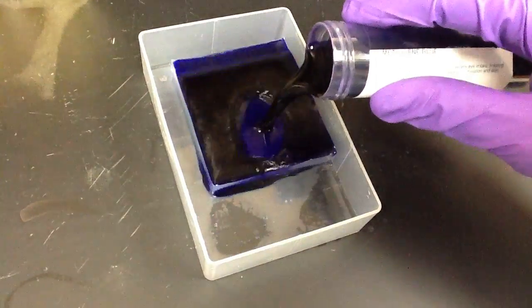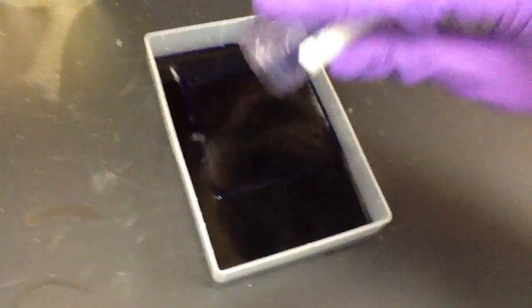We start by placing our gel into a container and pouring the dye on it. We let it incubate with the dye for one minute before pouring the dye back into its container.